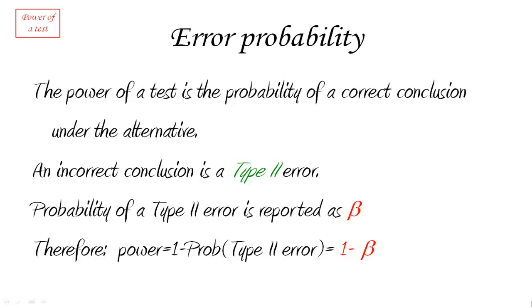Power and probability of type 2 error are related in that their sum is always 1. Both are calculated under the assumption that the alternative is correct. If the alternative is correct, either we come up with the right conclusion—that's power—or we come up with the wrong conclusion—that's a type 2 error. So both together sum to 1.